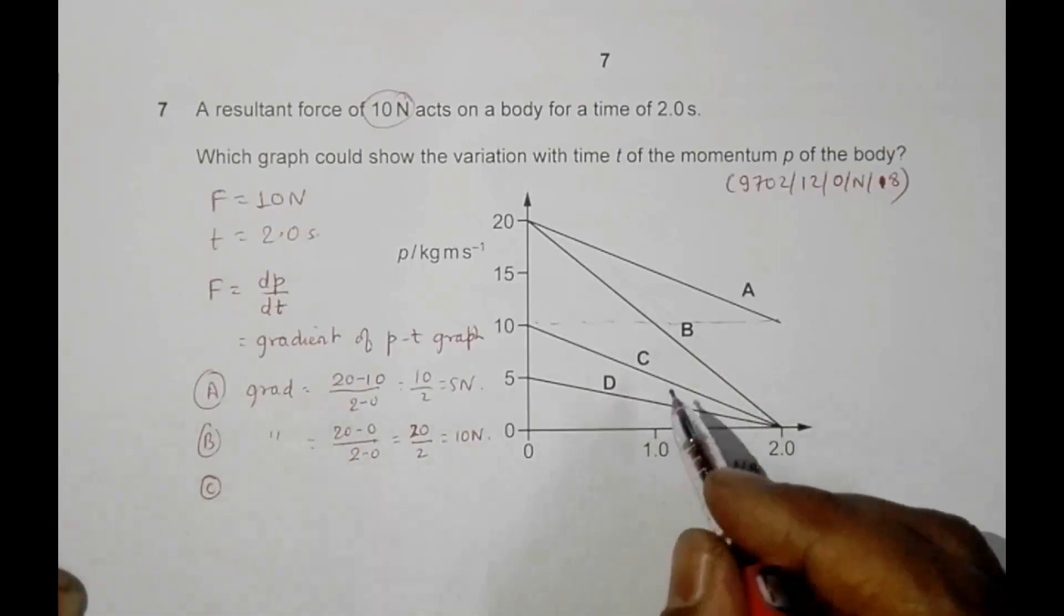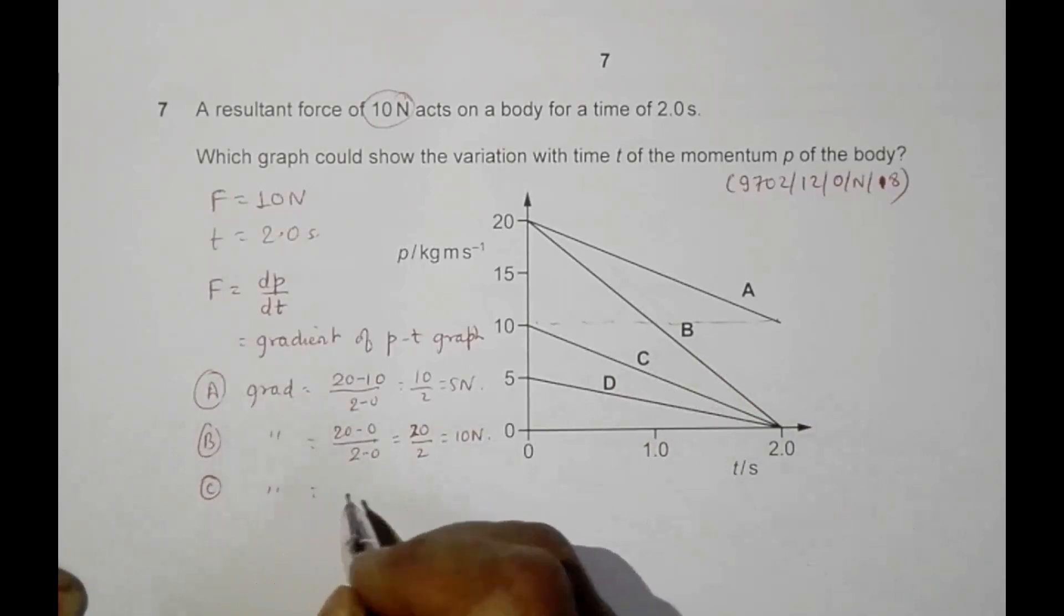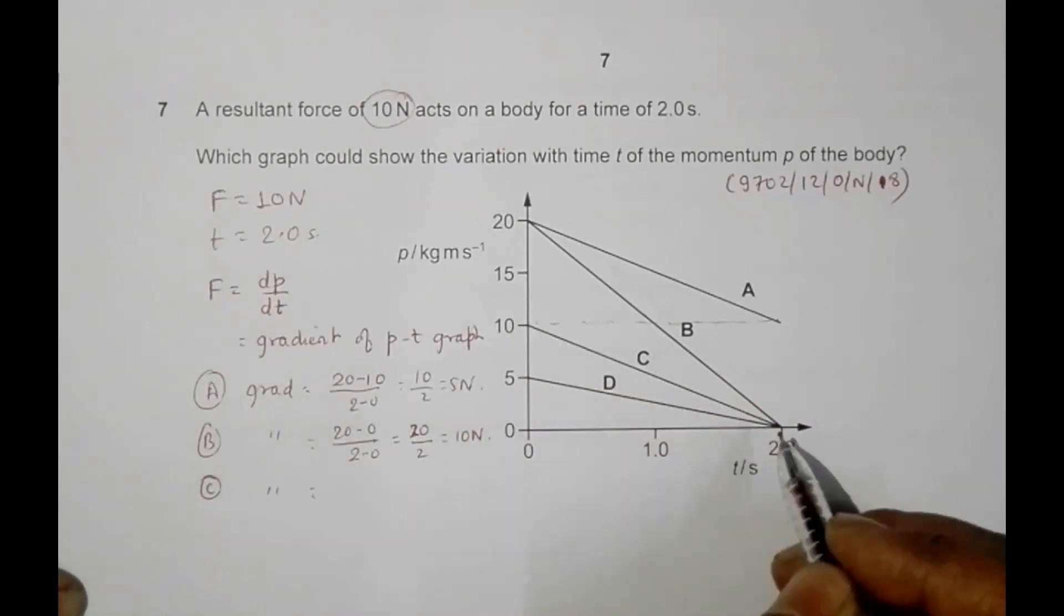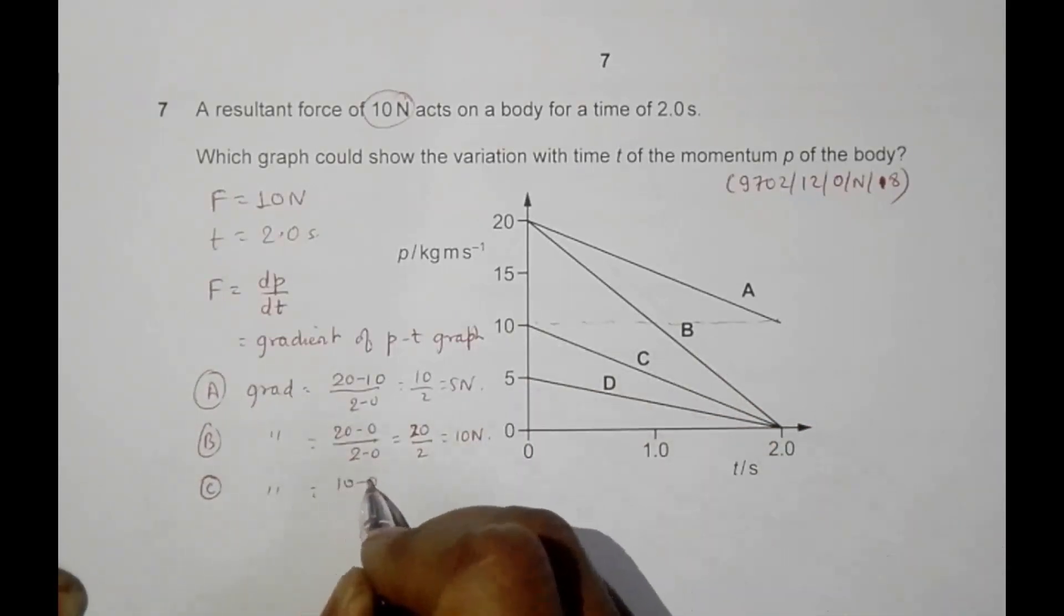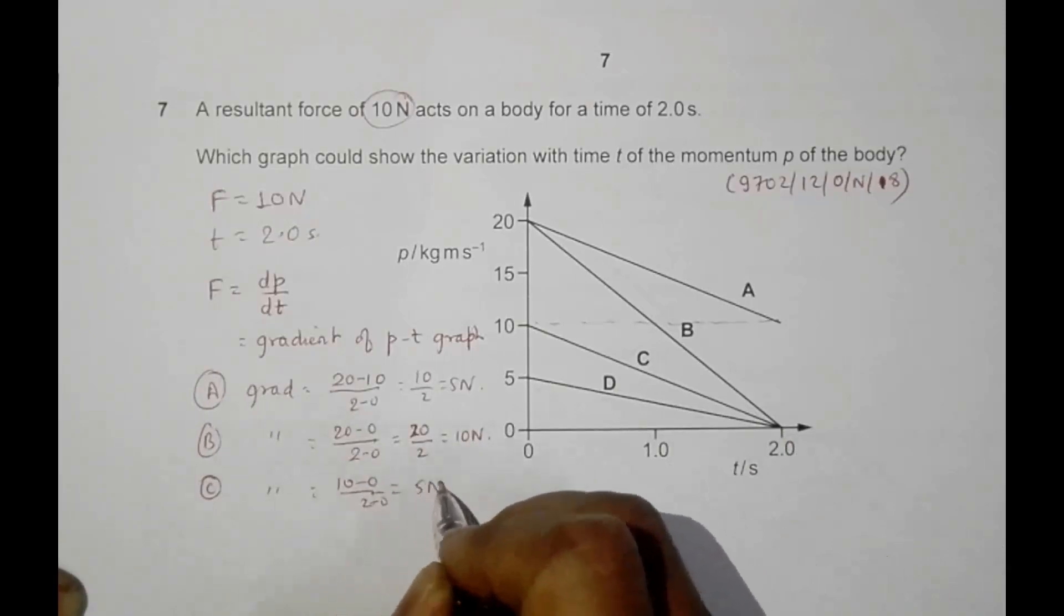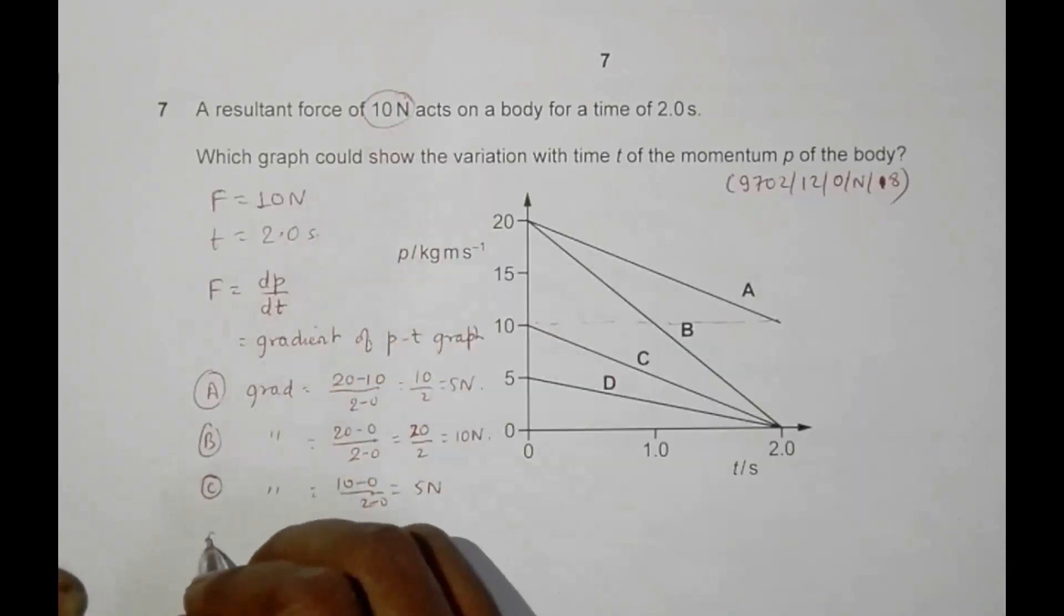In choice number C we have the gradient is equal to, it is 10 minus 0 by 2 minus 0, so it should be equal to 5 Newton, not according to the question.